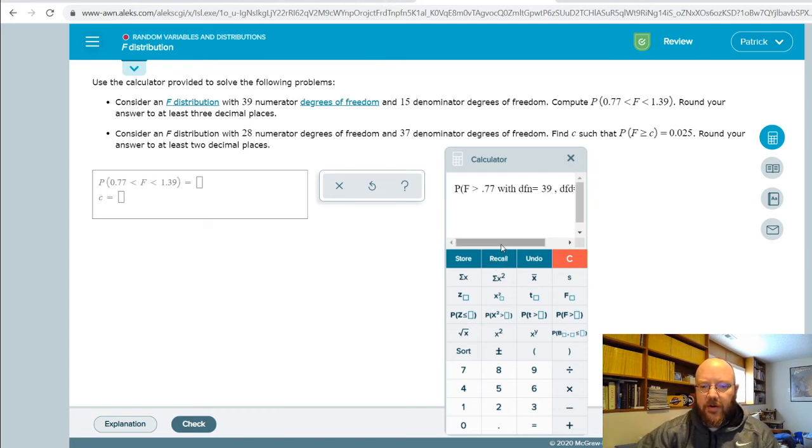And this is f dot 0.77 with 39 numerator and 15 denominator. And then just subtract the next one. And so since we're looking from the right to the left, take that first one, subtract the second one. You get the difference between the two.